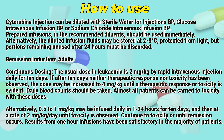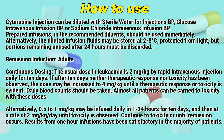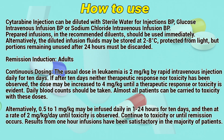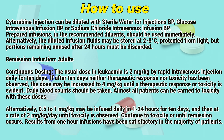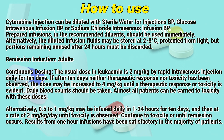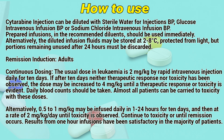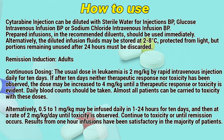Remission induction in adults — continuous dosing: The usual dose in leukemia is 2 mg per kg by rapid intravenous infusion daily for 10 days. If after 10 days no therapeutic response nor toxicity have been observed, the dose may be increased to 4 mg per kg until a therapeutic response or toxicity is evident. Daily blood counts should be taken. Almost all patients can be carried to toxicity with these doses.